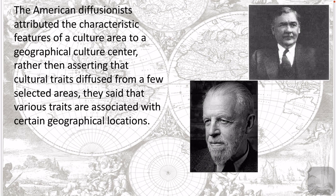At the same time, in America, another school of thought emerged based on the theories of Franz Boas and his students. This school of thought was led by Clark Wissler and Alfred Kroeber. In the first few decades of the 20th century, with its modest claims, the American Diffusionists attributed the characteristic features of a cultural area to a geographical cultural center, rather than asserting that cultural traits diffuse from a few selected areas. They said that various traits are associated with certain geographical locations — traits develop in a certain area, then diffuse outwards. They concluded, after mapping and classifying the tribal groups of North and South America, that cultural traits tend to spread out in all directions from the center of a region.